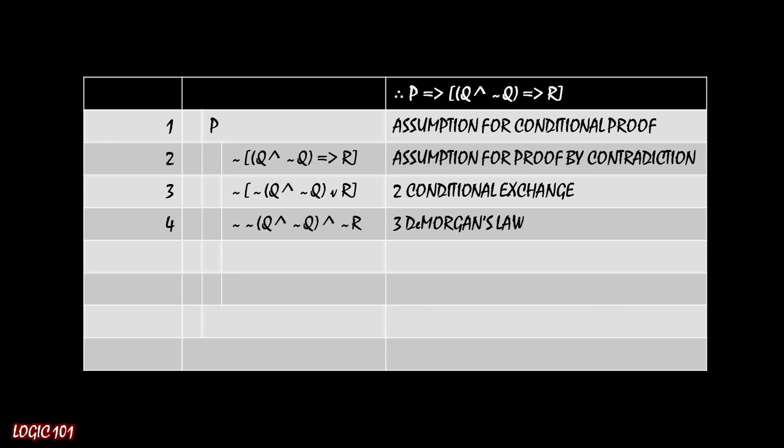Now we can apply DeMorgan's to it. And if we do that, we put that negation through the brackets. So we have ¬(¬(Q ∧ ¬Q)). Then we flip the disjunction into a conjunction. And then we distribute that negation one more time to the R. And so we have ¬R.